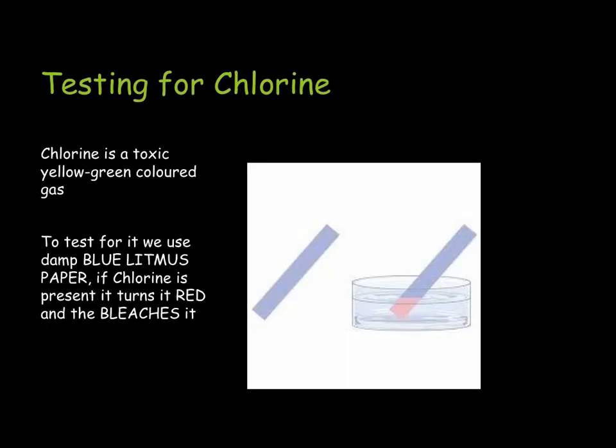The final gas we need to test for is chlorine. We've come across chlorine before in the groups video, where it is a member of the halogens — the group 7 elements. For chlorine, we test it using damp blue litmus paper. It will then turn it red and then eventually turn it white. This whitening, or bleaching, tells us that we have chlorine present. Testing for chlorine is especially important due to its toxicity.